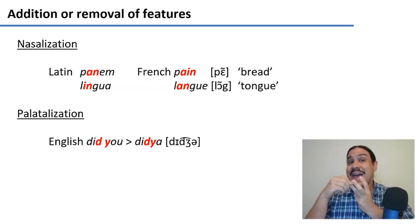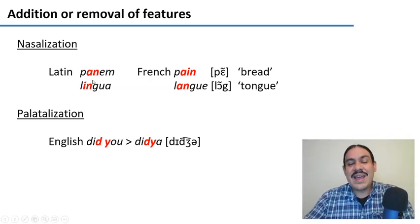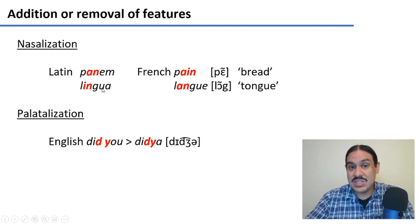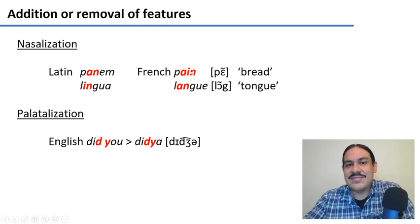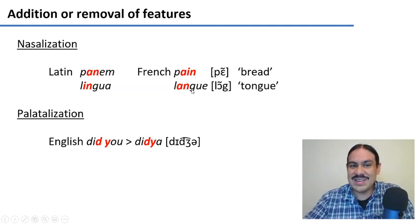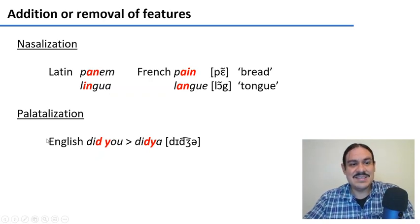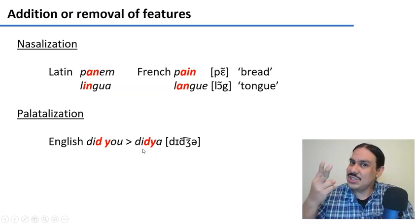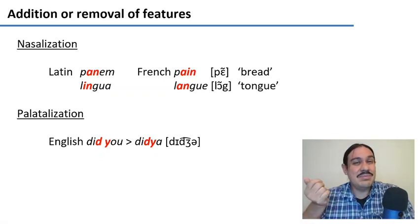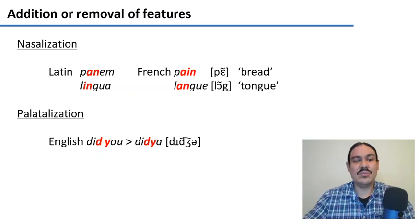Languages can also change because features are added. This happened to French. In Latin, we have words like 'panem' and 'lingua', with a vowel and an N, meaning bread and tongue. In French, the N was lost, but not its nasality. People heard that there must have been something nasal in there, so they assigned the nasality feature to the vowel. Now we have 'pain' and 'langue' for bread and tongue in French — they became nasalized. In English we have palatalization, where the influence of a palatal assimilates an alveolar sound, like in 'did you', 'could you', 'would you'.